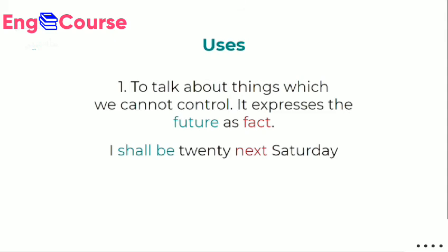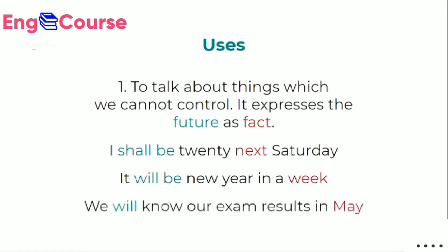Future indefinite tense is used to express future facts — things that no one can control. For example, 'Next week I will be 20 years old' — no one can control this; it will happen and it shows a future fact. Similarly, 'It will be New Year in a week' — no one can stop it. Another example: 'We will know our exam results in May' — this also shows a future fact. For all such sentences expressing uncontrollable future facts, use future indefinite tense.